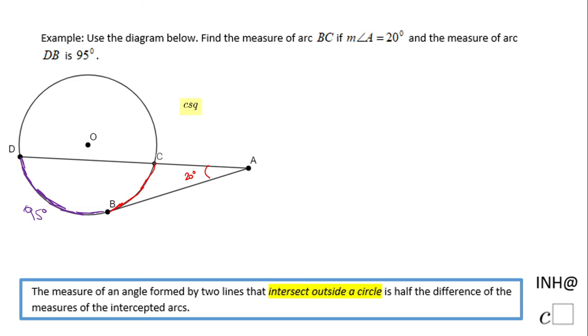For that reason I'm going to use this property, this theorem you see down here. The measure of an angle formed by two lines that intersect outside a circle. So you notice BA and AD they intersect outside of this circle. It's half the difference of the measures of the intercepted arcs.